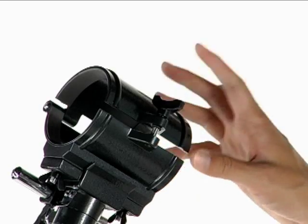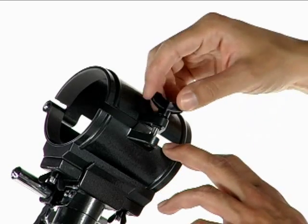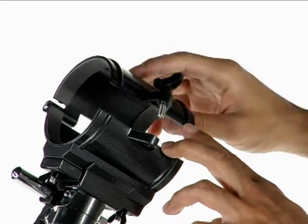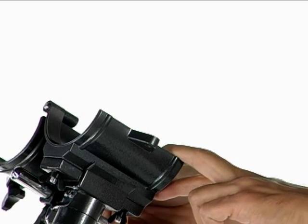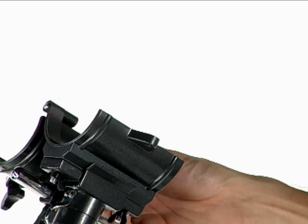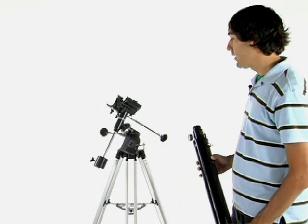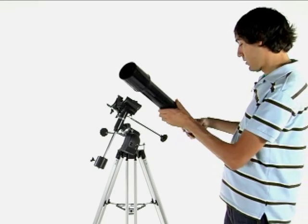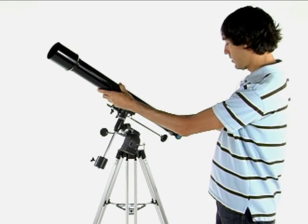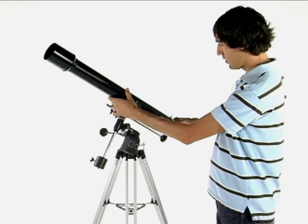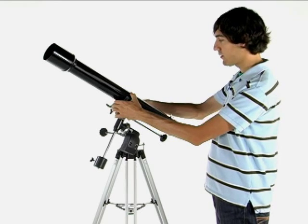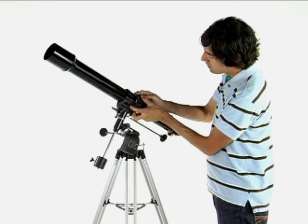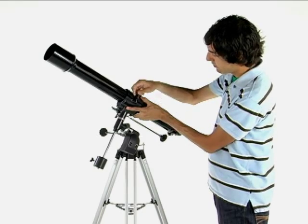So now what we're going to do is we're going to open the mount lock right here. This is where the OTA optical tube assembly will fit in. Now what we're going to do is put the OTA onto the locking mount. Just like this. And we will tighten it down now.